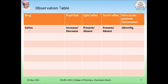You then prepare an observation table with columns for the drug used, pupil size, light reflex, touch reflex, and intraocular pressure. You can write down whether pupil size is increased or decreased compared to control, whether light reflex and touch reflex are present or absent, and whatever intraocular pressure value you obtained using the tonometer.